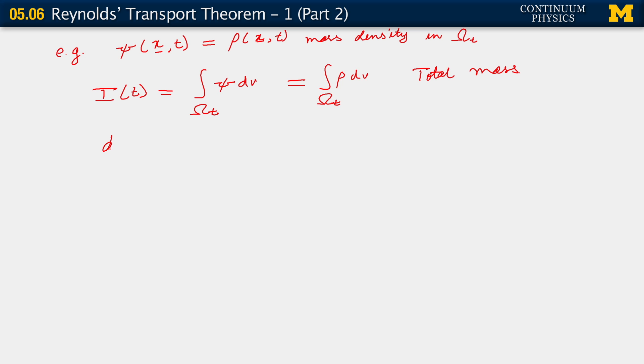And so, d/dt of I(t) equals—this is the total mass. Let's call it capital M. So d/dt of I(t) is just d/dt of M. Because it's fixed, that has to be zero. But now, if we apply our result from Reynolds transport theorem, what we get...